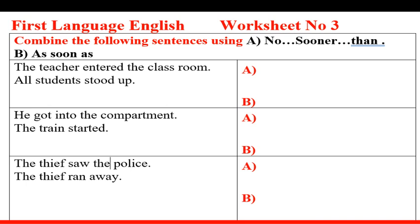First question is before you: The teacher entered the classroom and all students stood up. You need to use it in both no sooner than as well as as soon as. Likewise there are other two questions: He got into the compartment, the train started. The thief saw the police, the thief ran away. Let us see the answer.